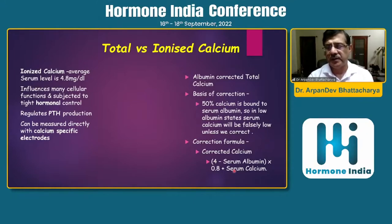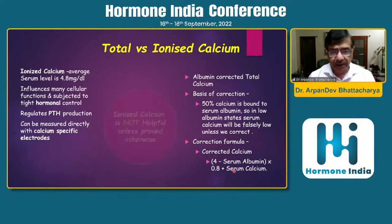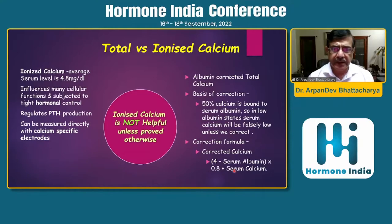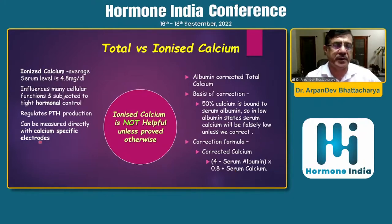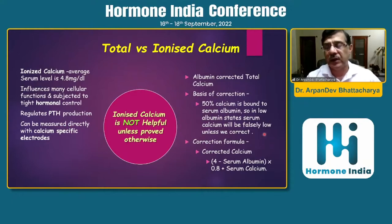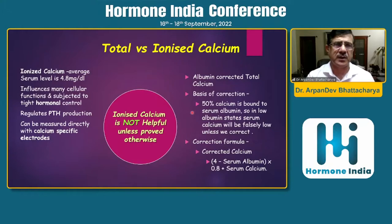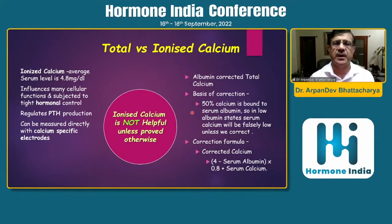The albumin-corrected total calcium formula is: (4 minus serum albumin) × 0.8 + serum calcium. If albumin is high, measured calcium will be low but corrected calcium will be normal. If albumin is low, measured calcium will be low — the other way around. In clinical practice, ionized calcium is not helpful in most situations. There is virtually no clinical scenario we cannot manage with albumin-corrected total calcium, which is certainly much cheaper than ionized calcium.